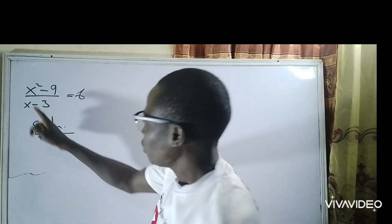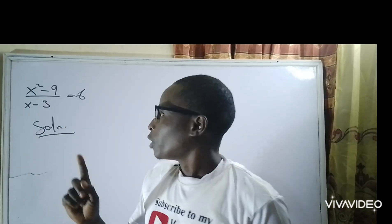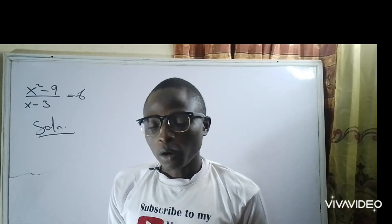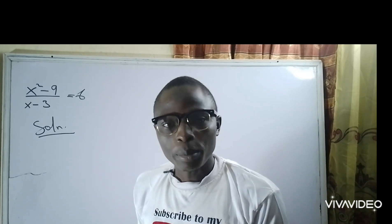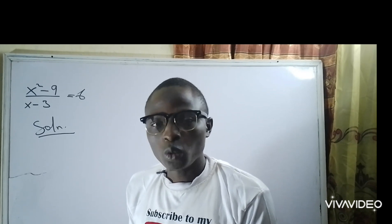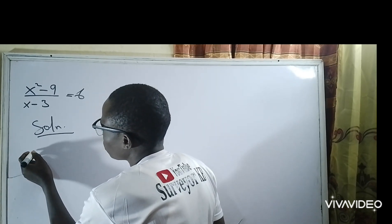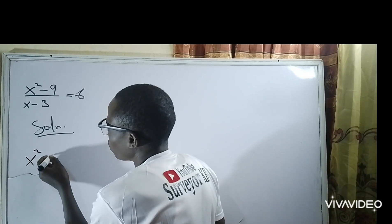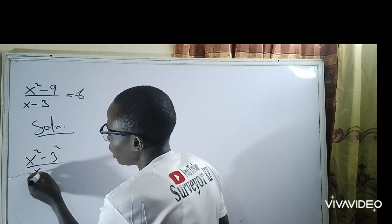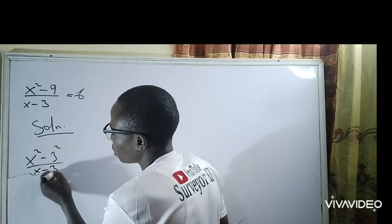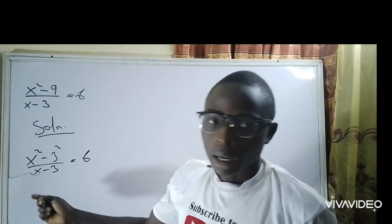We have x squared minus 9, and x squared minus 9 can be written as x squared minus 3 squared, because 3 squared is 9. So I can put it as x squared minus 3 squared over x minus 3, equal to 6.